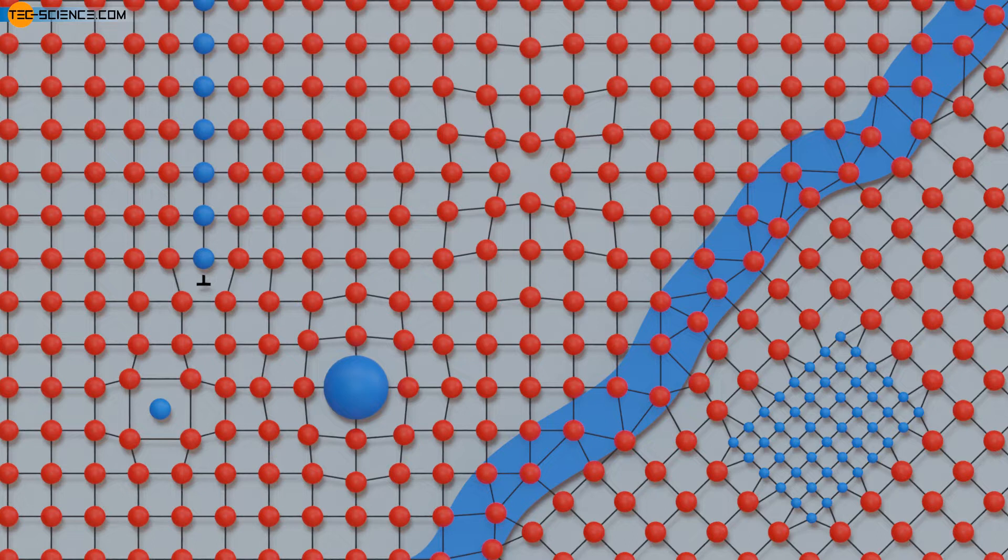At these defects, the real lattice deviates from the idealized perfect structure. Depending on the strength of the influence of the individual lattice defects on the surrounding structure, the defects can be divided into different types. We will discuss this in more detail in the following.